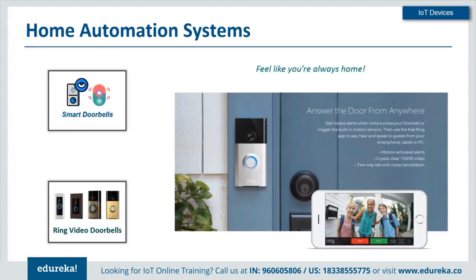Another device worth mentioning is the video doorbell by Ring — it's like you're always home, as it lets you answer your door from just about anywhere. It will alert you of motion within 30 feet of your door and stream live footage onto your phone. If somebody rings the bell, you can let them know you're not home and even have a word with them. With night vision, wide-angle high-definition recordings get simultaneously saved to the cloud for your use anytime. Virtual or home assistants like Amazon Alexa, Google Assistant, Siri, and Jibo are also a trending application of IoT in home automation.